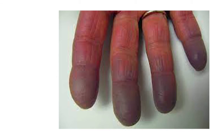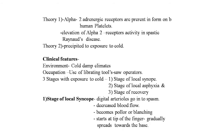Two theories explain Raynaud's syndrome. Theory one: alpha-2 adrenergic receptors are present on human platelets, and elevation of alpha-2 receptor activity causes vasospasm — this is Raynaud's disease. Theory two: it is precipitated by exposure to cold. Clinical features include environmental cold or damp climate, occupation, and use of vibratory tools such as saw operators.